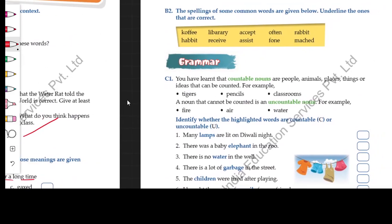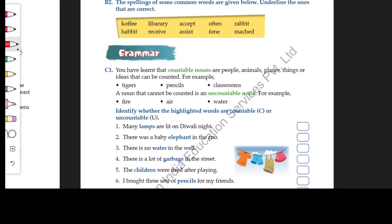Here you are given spellings of some common words. You have to tell which spellings are correct. For example: coffee, library, accept, orphan, rabbit, habit, receive, assist, phone, matched. These are words, but keep in mind some of these spellings are wrong and some spellings are correct. So you have to underline the ones with correct spelling and skip the ones with incorrect spelling.